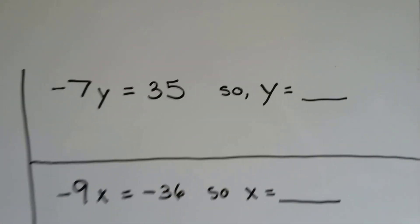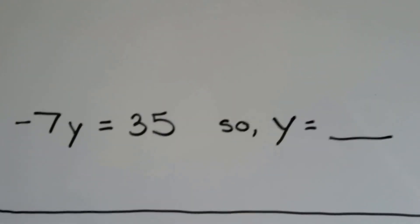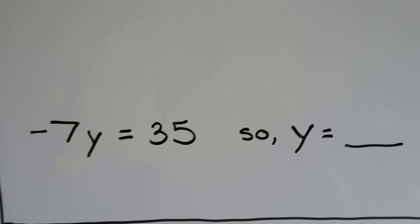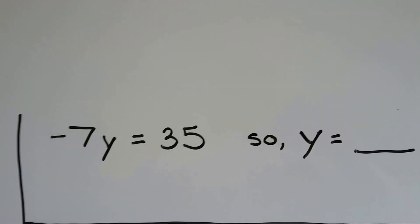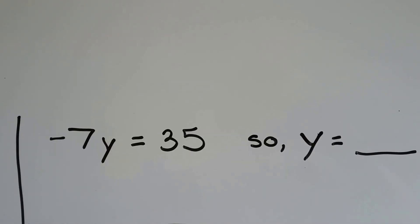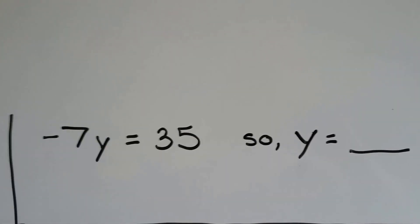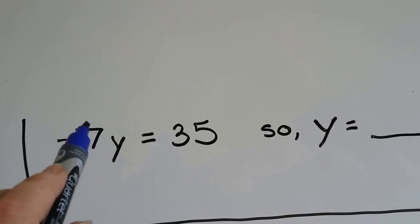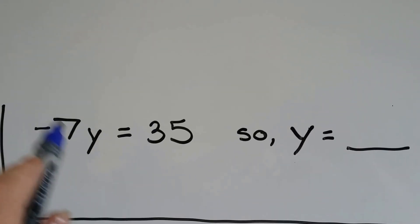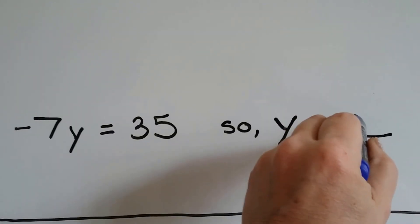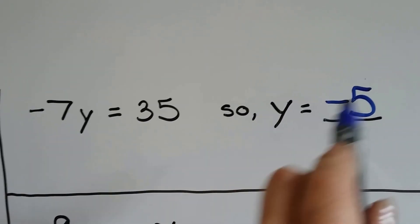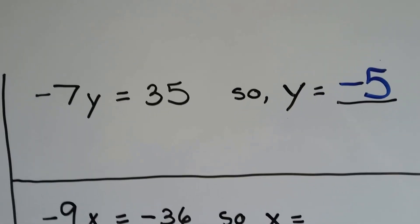Let's try some problems. We've got negative 7y equals 35. What can y equal — what times negative seven gives a positive 35? We know seven times five is 35, but we need a positive answer, which means we need like signs. So y has to be negative five, because negative seven and negative five have the same sign, and that makes positive 35.